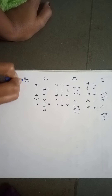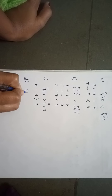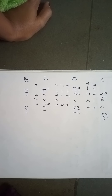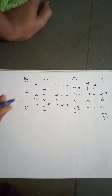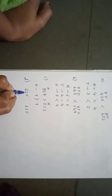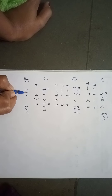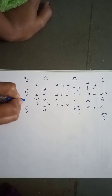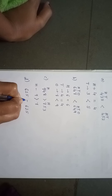Now see 625 and 625. Compare the numbers. The 100th place number is 6 and here also 6. The 10th place number is 2 and here also 2. The ones place is 5 and here also 5. So both sides it is 625 and 625. You can write the equals to symbol here.